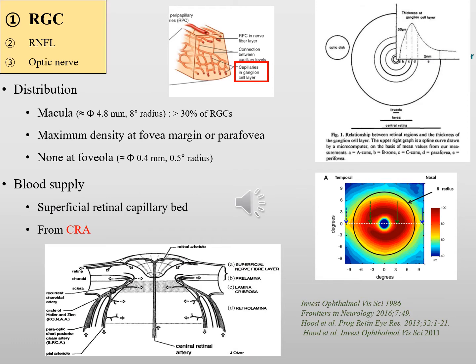Let's briefly review the blood supply to the three glaucoma target tissues. More than 30% of retinal ganglion cells reside within about an 8-degree radius area of the macula. The fovea is the most central area, about 400 microns in diameter, and has no retinal ganglion cells. The blood supply to the retinal ganglion cells in the macula is from the superficial retinal capillary bed, which originates from the central retinal artery.